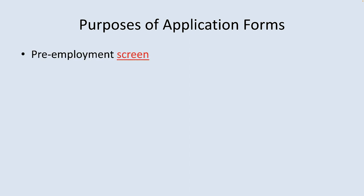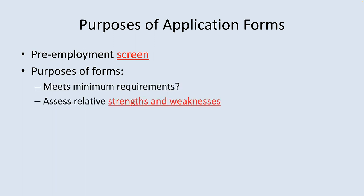The nature and role of application forms is that they serve as a pre-employment screen in the form of a series of questions designed to provide information on the general suitability of applicants for jobs to which they are applying. The application form has at least two key purposes: to decide if the applicant meets the minimum requirements of a position, and to assess and compare the relative strengths and weaknesses of competing applicants.